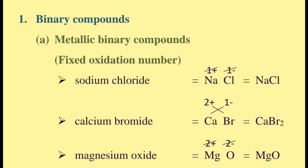Magnesium oxide. Magnesium is Mg with oxidation number 2 plus. Oxide is O with oxidation number 2 minus. 2 plus and 2 minus cancel out, so the formula is MgO.